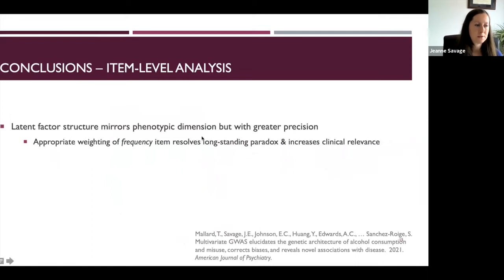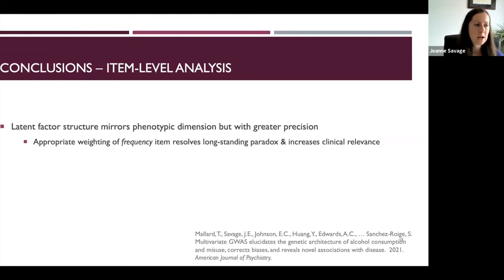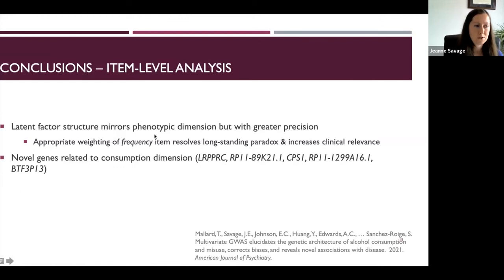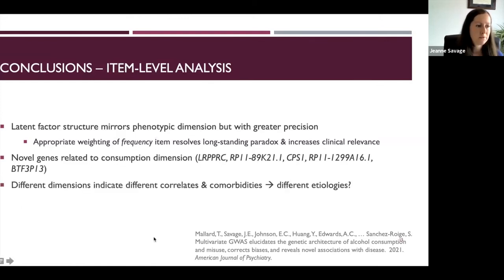That last finding helped solve a paradox in the alcohol genetics field: we had observed strong positive genetic correlations between many alcohol misuse measures and higher socioeconomic status — the opposite of what clinical and epidemiological literature suggests. By accounting for this heterogeneity and appropriately weighting items based on their shared or unique genetic influences, we improve the clinical relevance of our phenotypes, increase discovery of novel genes, and reveal different genetic etiologies for consumption versus problems dimensions — informing both distinct clinical phenotyping and underlying biological mechanisms.